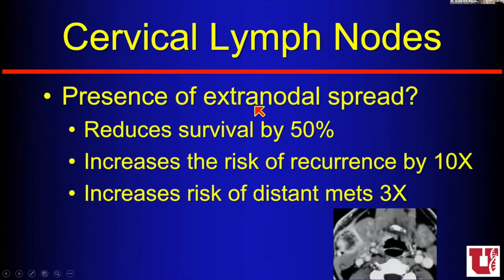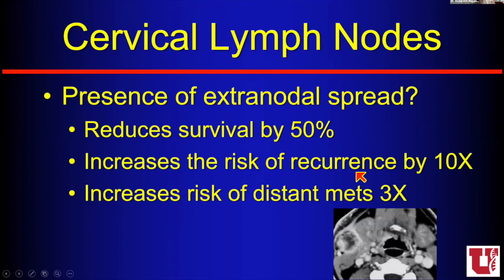Extra nodal spread is also very important. If you see tumor extending beyond the lymph node — fuzziness around the lymph node like the cancer has escaped the node — that cuts the prognosis by half again. It also increases the risk of recurrence by 10 times. If metastatic disease has left the lymphatic system and is crawling around the neck soft tissues, recurrence is more likely. It increases the risk of distant mets by three times.